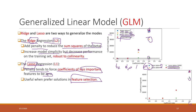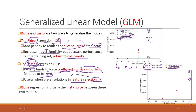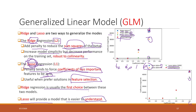We have two types of generalized linear regression models for regularization: Ridge and Lasso. Ridge adds penalty to reduce the sum of squares of the betas. Lasso adds penalty to force coefficients of less important features to zero. Ridge, or L2, is usually the first choice when you want to reduce model complexity. Lasso provides a model that is easier to understand because it gives you fewer features.